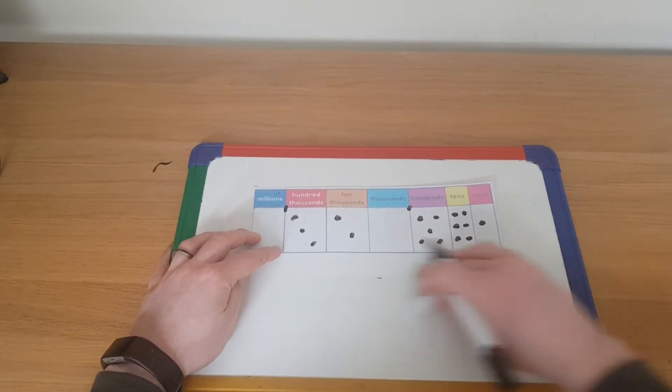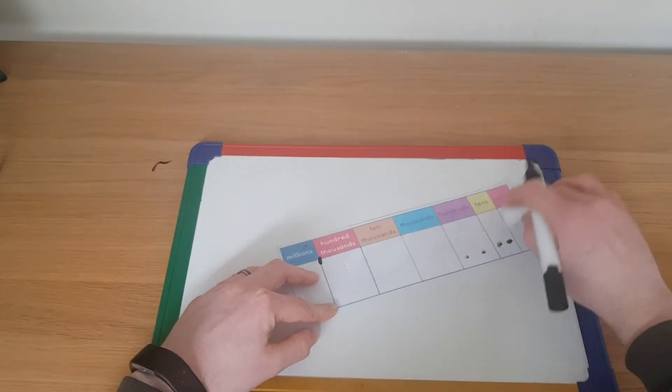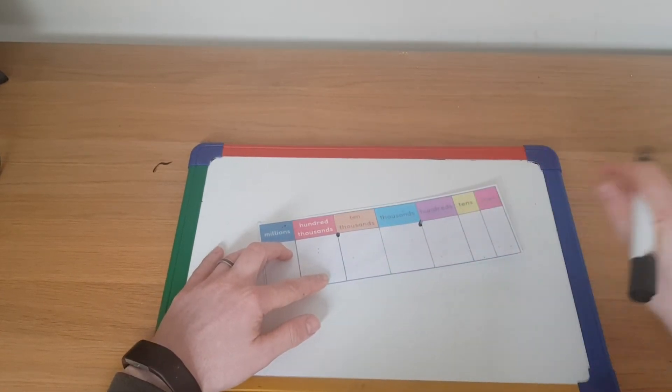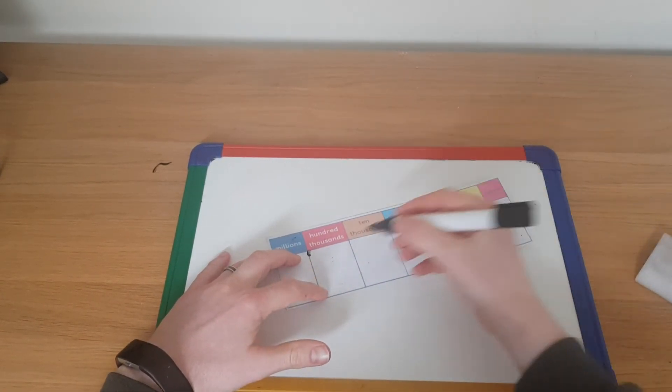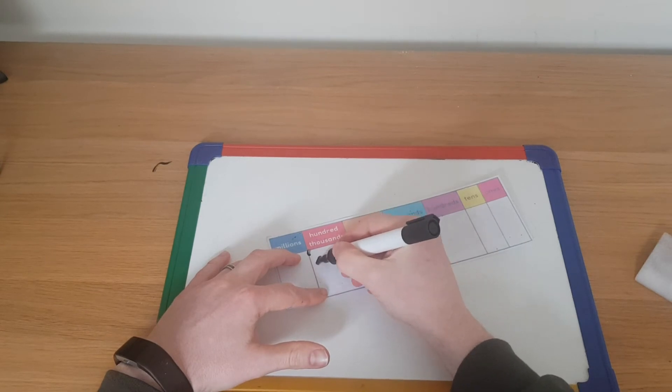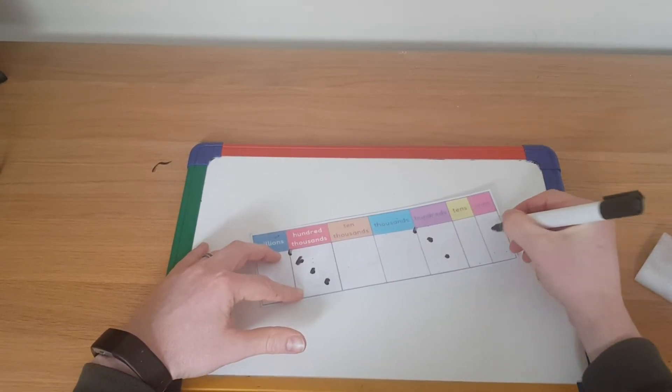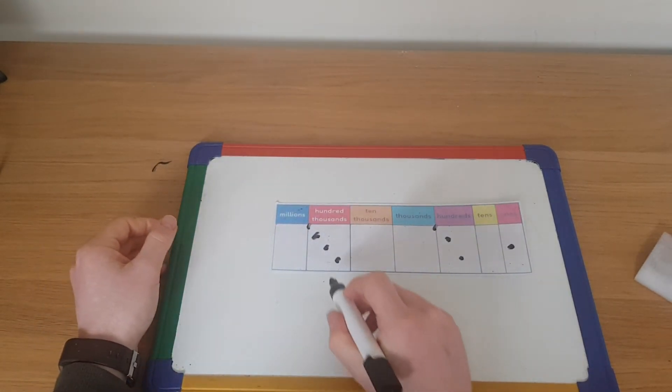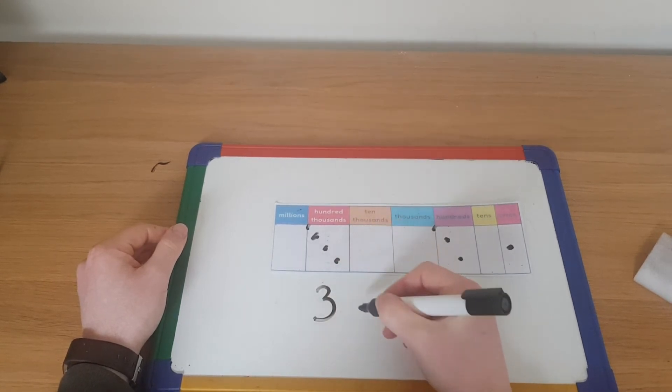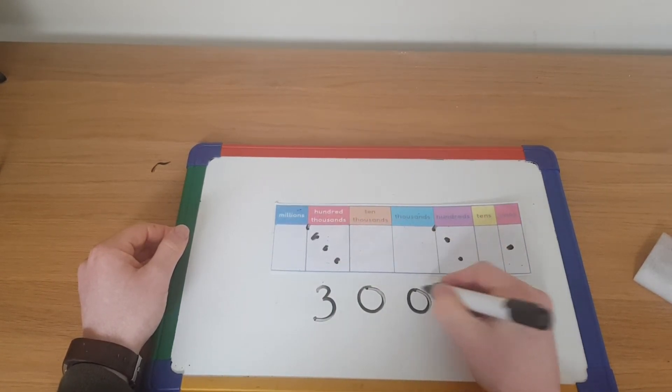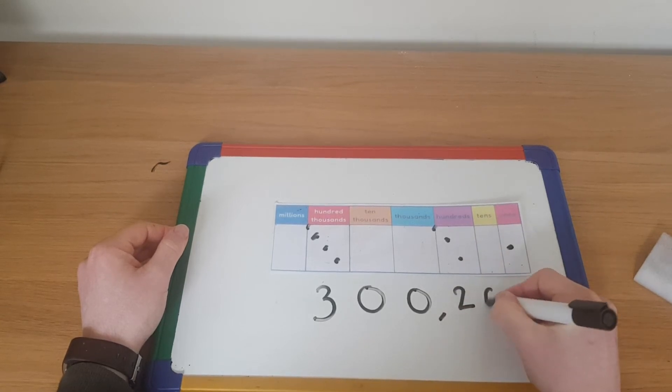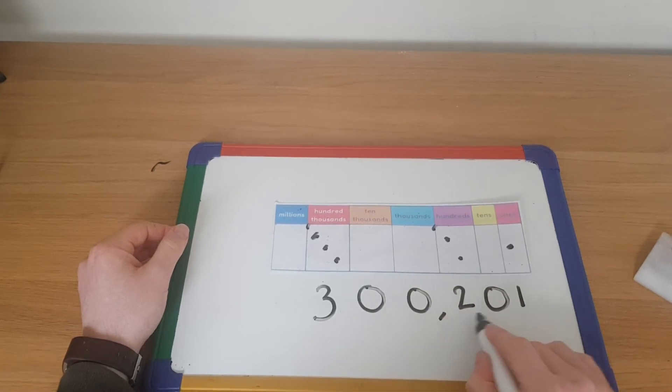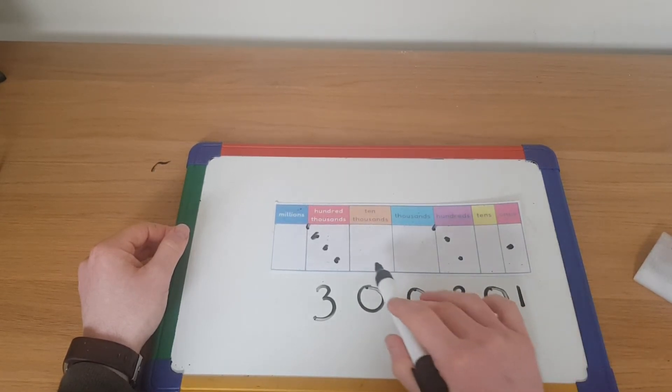So if that's the case then, write down this number for me. Oh, wrong place. Write down this number for me, so I'll put a three in there, two in there, and a one in there. You should have then ended up with three in the hundred thousands, zero in the ten thousands, zero in the thousands, two in the hundred, zero in the one, zero in the tens, one in the ones. Three hundred thousand, two hundred and one. So just remember your place value.